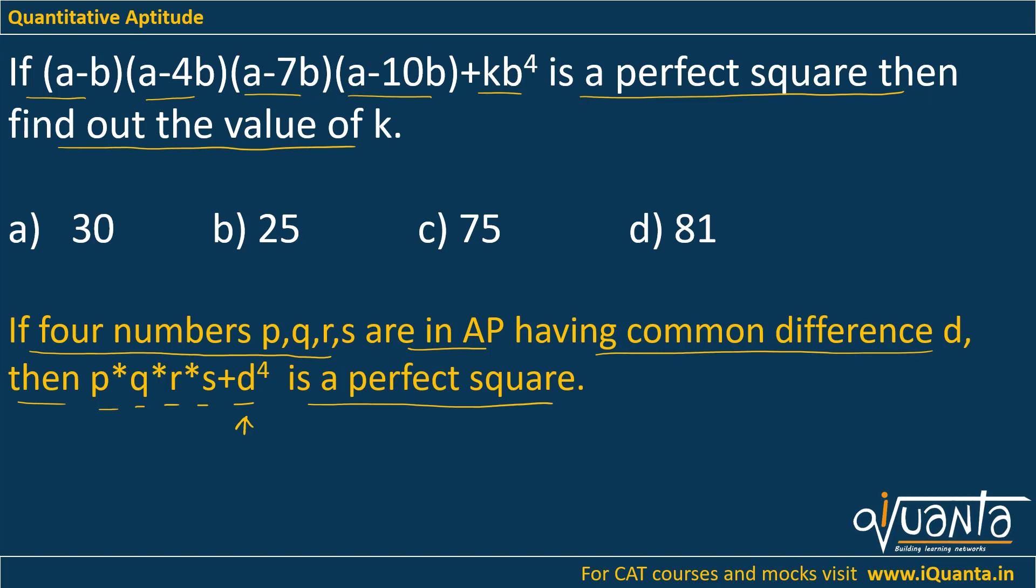So the terms that we have here—(a-b), (a-4b), (a-7b)—they all have a difference of -3b. So if I compare these with the rule, I can see that four numbers (a-b), (a-4b), (a-7b), (a-10b) are being multiplied.